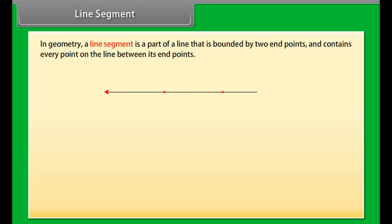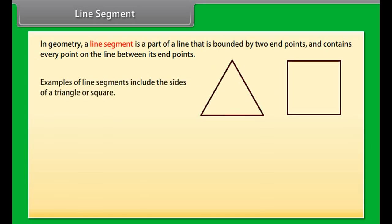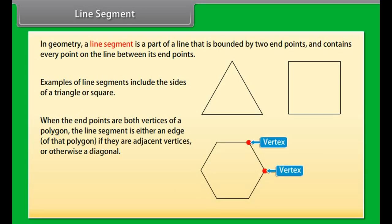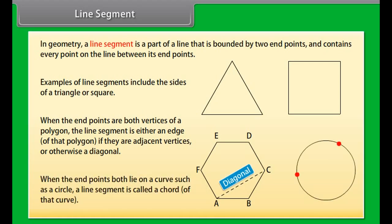Line Segment. In geometry, a line segment is a part of a line that is bounded by two end points and contains every point on the line between its end points. Examples of line segments include the sides of a triangle or square. When the end points both lie on a curve such as a circle, a line segment is called a chord of that curve.